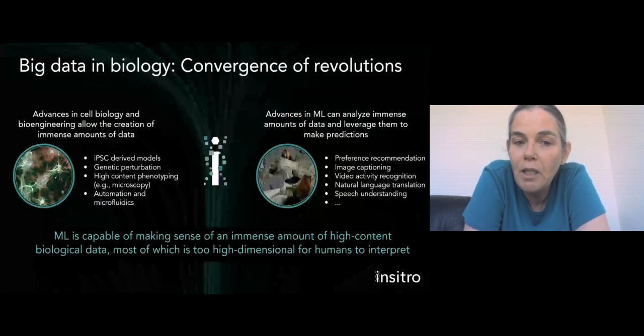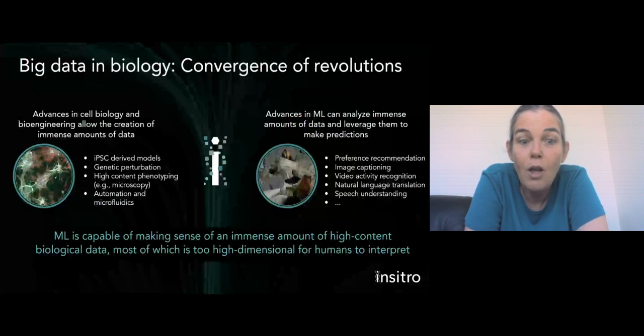We also have the ability to perturb those cells using technologies like genome editing, using CRISPR, to further understand what the effect that we see of a particular genetic intervention is on the state of the cell. We can measure the state of the cell using a variety of phenotyping techniques, of which microscopy is one very important one, but there's also, for instance, single-cell RNA sequencing and others. And we can do this all at scale using automation and microfluidics. You put all of these together, what we end up with is a perfect storm of data production, which allows us to create massive disease-relevant data sets with enormous amounts of data.